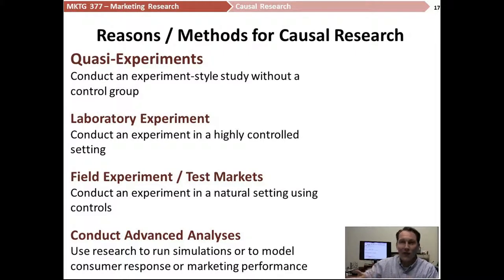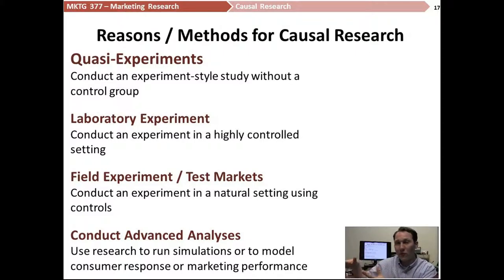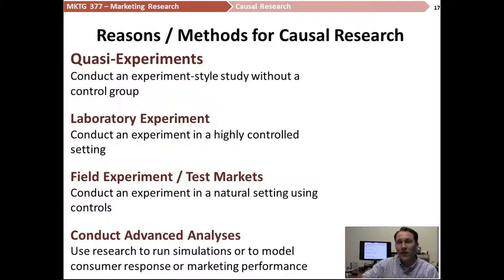Another thing we could do is test advertising effectiveness — roll out a test ad in one part of the city and see if that ad is having an effect on candy bar sales, while in the other part of the city where we're not running those ads, seeing if the candy bars aren't selling as well. There are all kinds of different permutations and different ideas around test marketing, some as simple as I just explained, some of which can get very, very complicated.